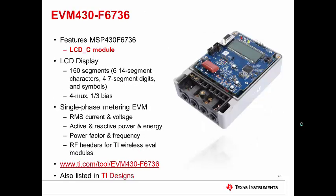Finally, there is the EVM430 F6736. This is a metering EVM. It features the F6736 device, which has an LCD-C module, and an LCD display of 160 segments, including 14-segment characters that can do alphanumeric characters, as well as other symbols. This is a single-phase metering EVM that takes a number of different metering measurements. You can find this tool at TI.com, and you can also find it under TI Designs, where you'll find a number of other documents and support for it.